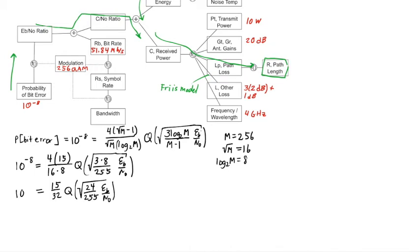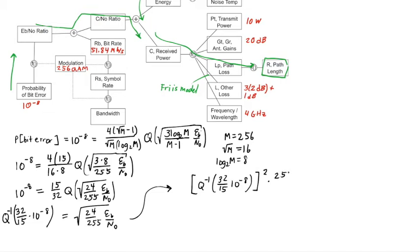So what I need to do, and this is the kind of thing you perhaps are not used to, is to invert this Q function. So I'm going to move this 15 over 32 to the other side and get 32 over 15. And then I'm going to take the inverse of the Q function. And then I'm going to square both sides. And then multiply by 255 divided by 24, and that will be my Eb over N0. I'm going to get a 319.0.